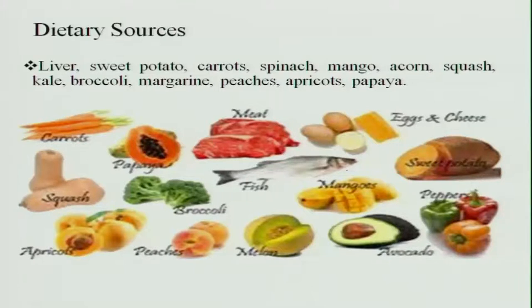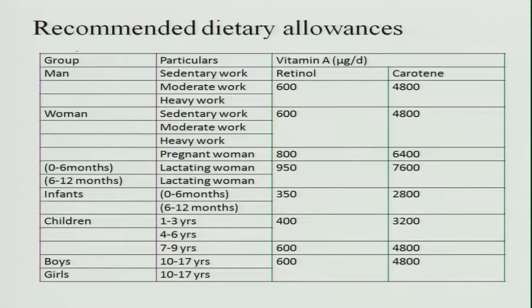The dietary sources of Vitamin A include liver, which is the best source for non-vegetarians. Otherwise, all yellow and orange colored fruits and vegetables, and dark green vegetables, are rich in Vitamin A. The recommended dietary allowance for all adults is about 600 micrograms in terms of retinol.